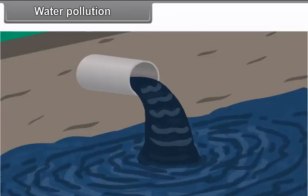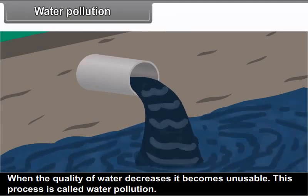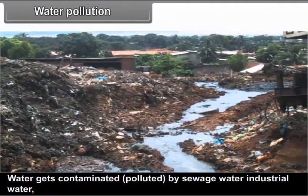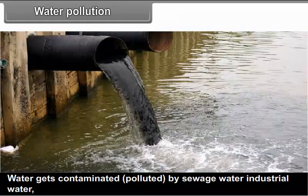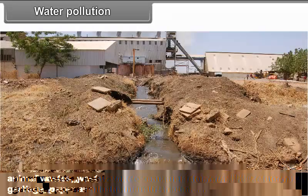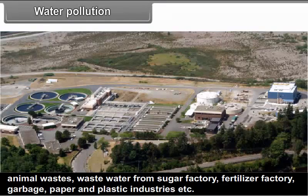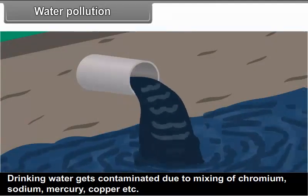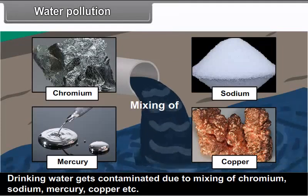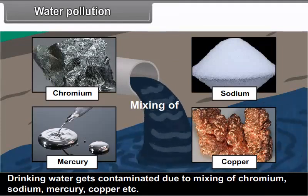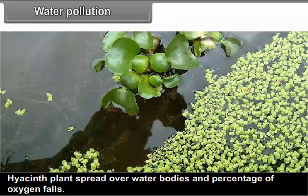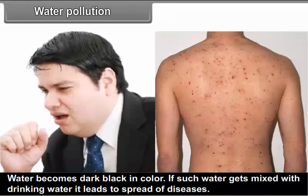Water pollution: When the quality of water decreases, it becomes unusable. This process is called water pollution. Water gets contaminated or polluted by sewage water, industrial water, animal wastes, wastewater from sugar factories, fertilizer factories, garbage, paper and plastic industries, etc. Drinking water gets contaminated due to the mixing of chromium, sodium, mercury, copper, etc. Hyacinth plants spread over water bodies and the percentage of oxygen falls. Water becomes dark black in color. If such water gets mixed with drinking water, it leads to the spread of diseases.